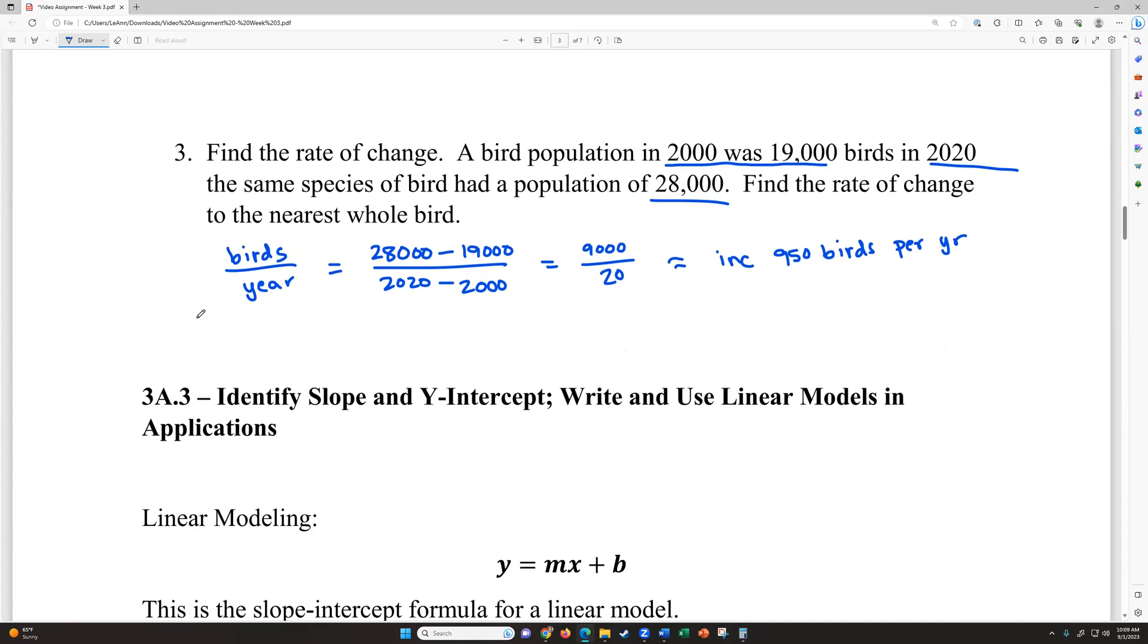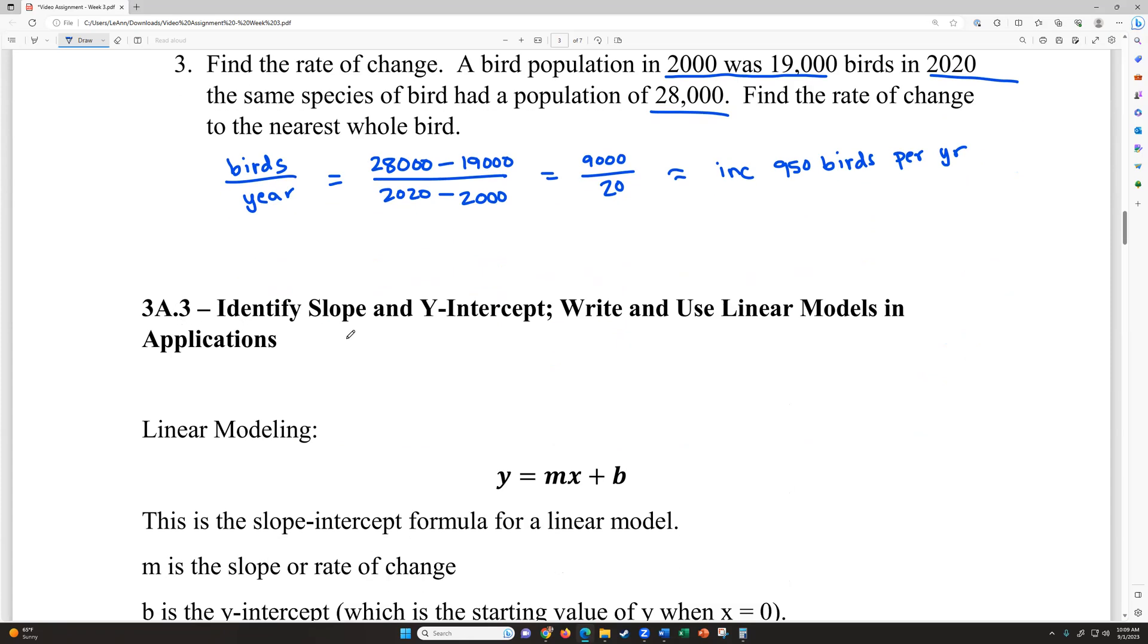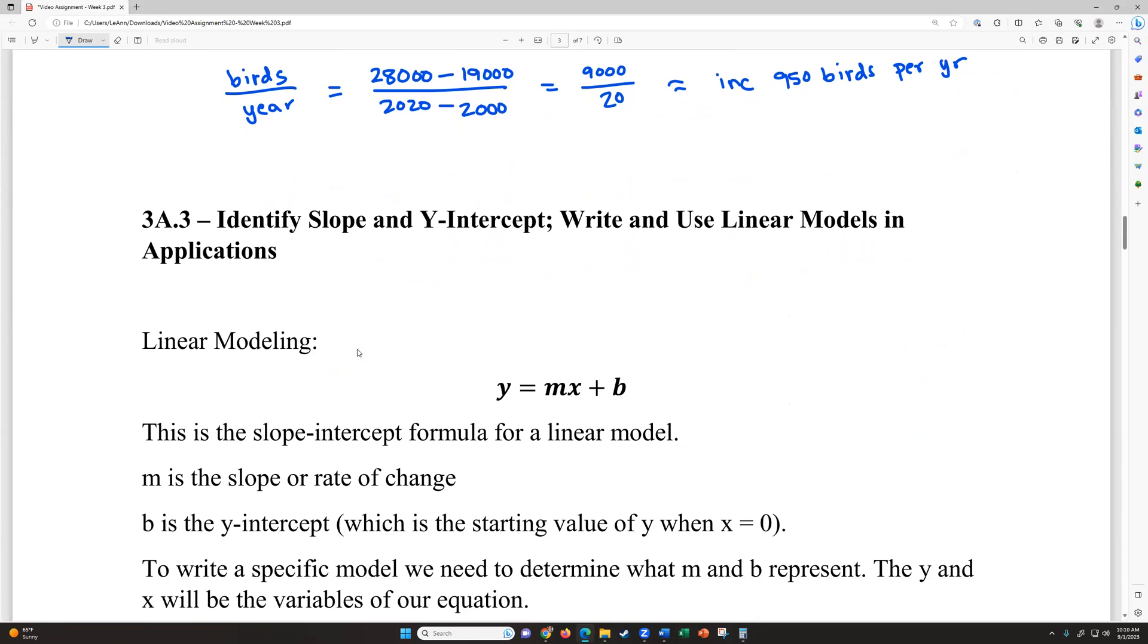That makes us move on to 3A3. I didn't do 3A2 on the pre-video for class, I'm going to do that with you guys. So just we're skipping to 3A3. So this relates to the slope topic. Identify slope and y-intercept and write and use linear models and applications. So when you want to write an equation that represents a linear or line-like model, things going in a line either up or down, this is the formula we use to represent lines. It's y equals mx plus b, where m is the rate of change or slope.